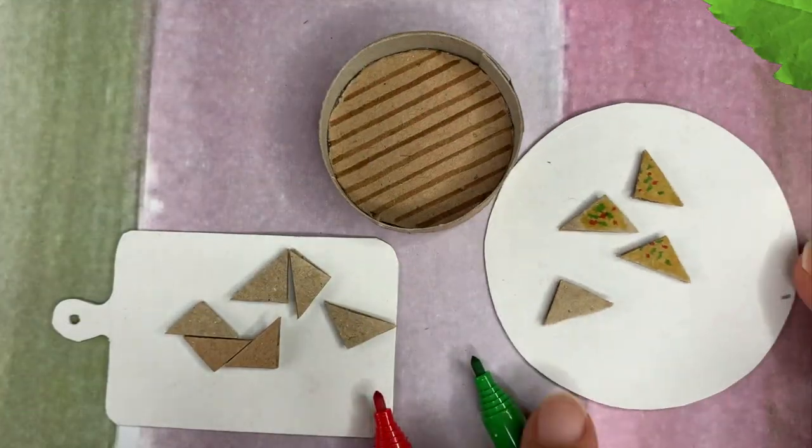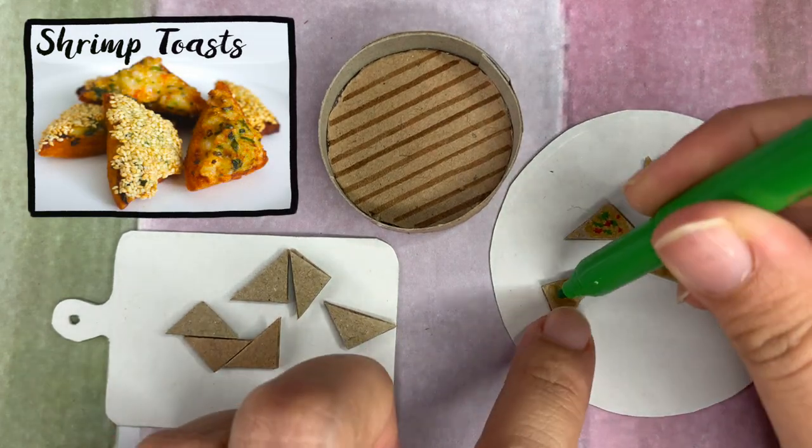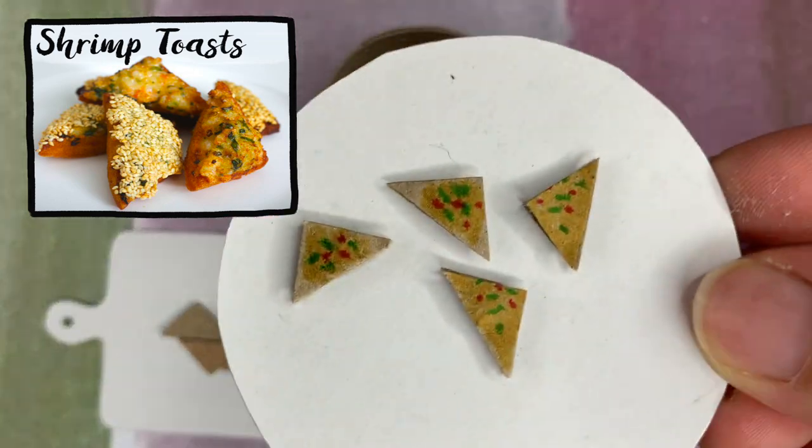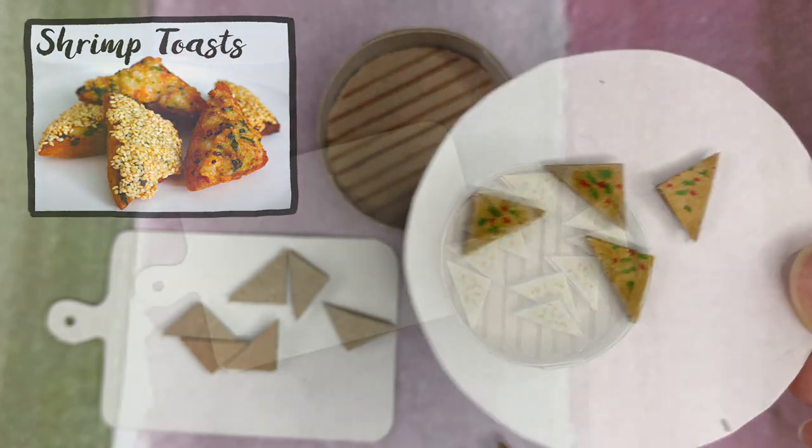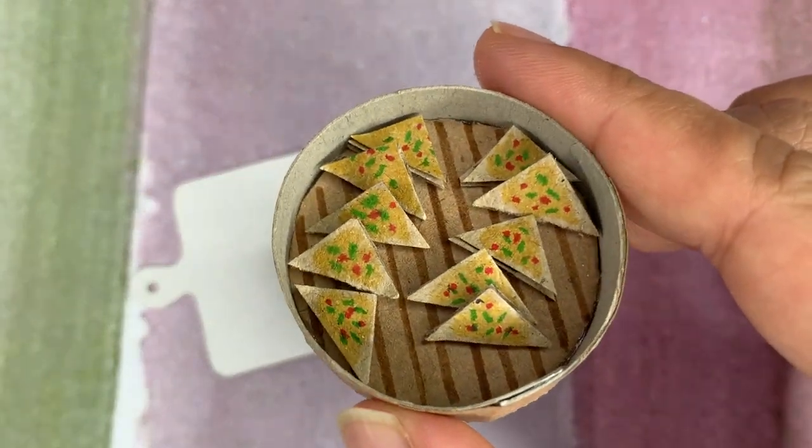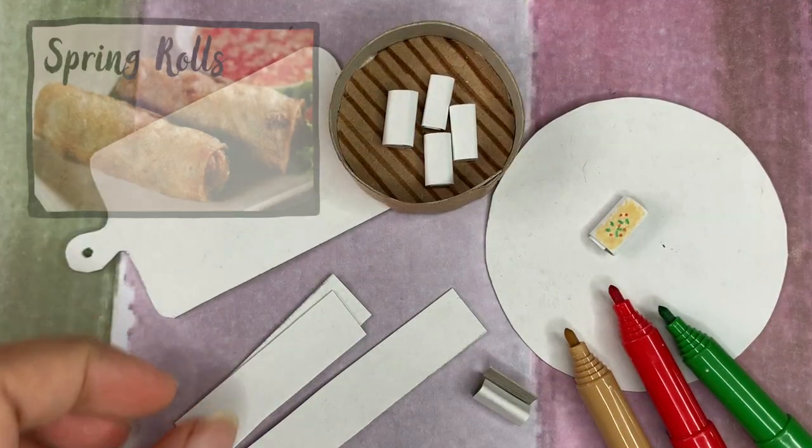Now let's cook the menu number 1, shrimp toast, using some tiny triangle pieces of cardboard. Menu number 2, spring roll.